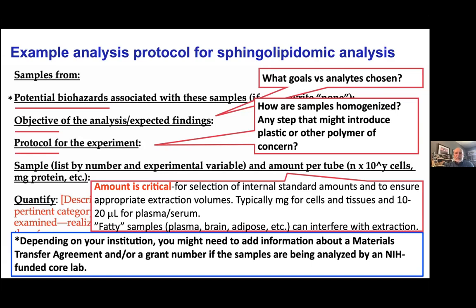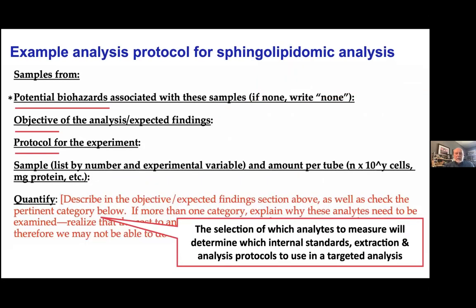Also think about whether any step in the procedure may introduce an agent that will interfere with the analysis. There's a fair amount of work being done with PEGs. People sometimes use plastic pipettes with organic solvents — for example, when dissolving a lipid added to cell culture — so thinking ahead for that is helpful. You've heard from several people that the amount is an important thing to know about. Investigators often think they're doing you a favor by providing higher amounts, but often smaller amounts are fully adequate — very small amounts of serum or cells in culture. When it comes to quantification, make sure you know which analytes the investigator wants to quantify so you know which internal standards and extraction protocols to use for your targeted lipidomic analysis.